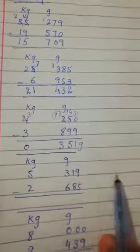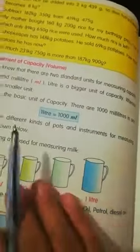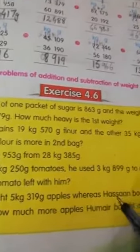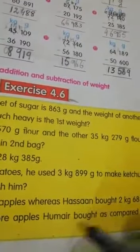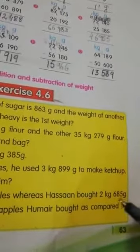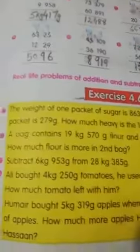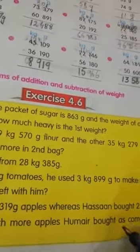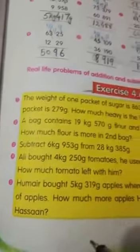Ab question number hamara hai five. Humer bought five kilogram three nineteen gram apples whereas Hasan bought two kilogram six eighty five gram of apples. How much more apples Humer bought as compared to Hasan?